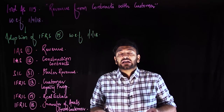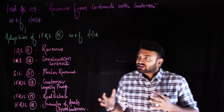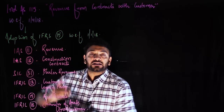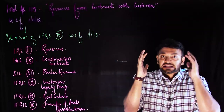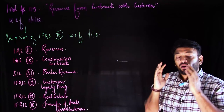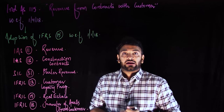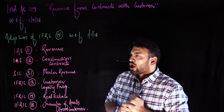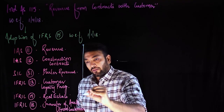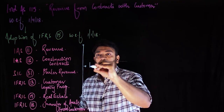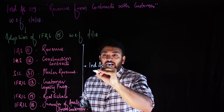Having two standards dealing with the same thing with conflicting views created a problem. A restructuring was needed — we had to harmonize and synchronize everything into one single standard covering the complete ambit of revenue recognition. All these standards were combined, leading to the evolution of one single standard: Ind AS 115 or IFRS 15.